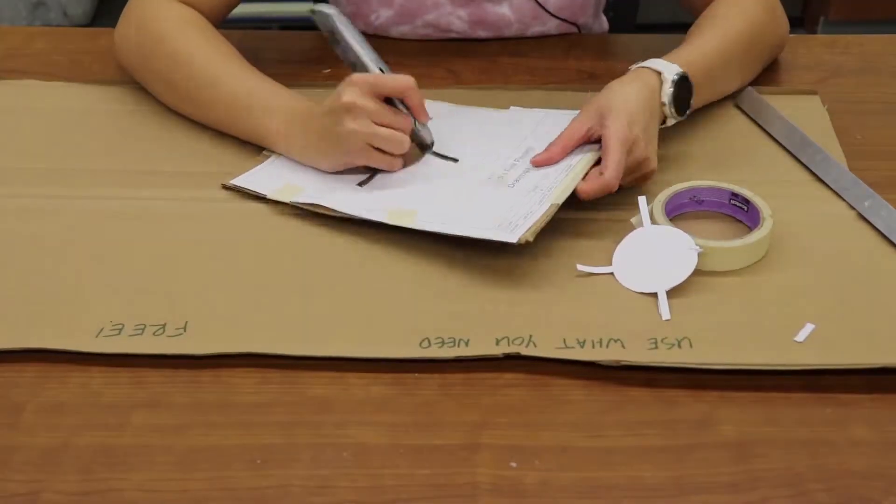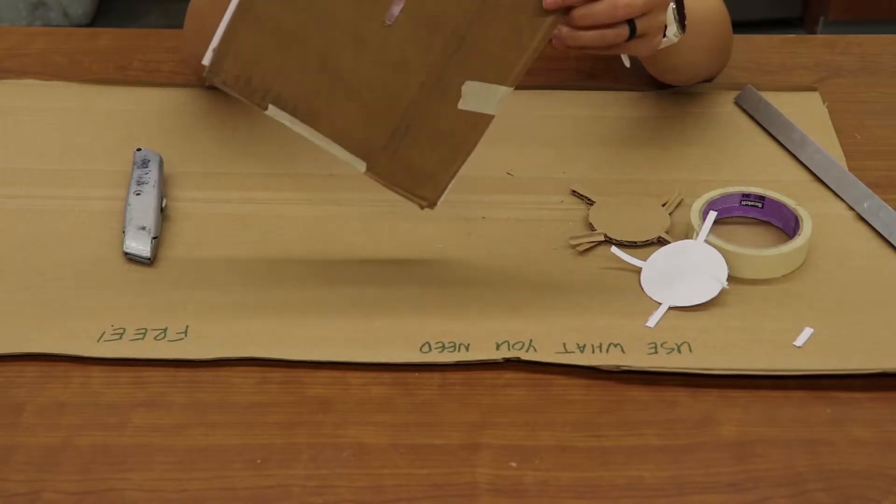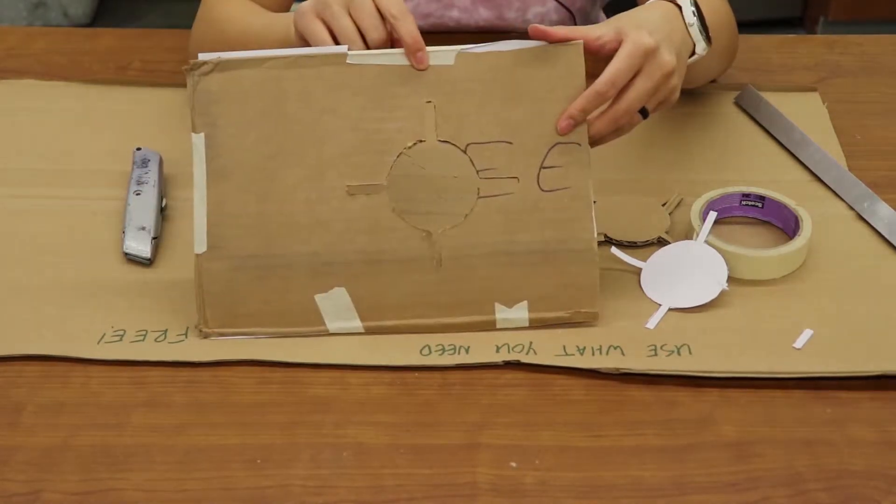Now that the fin alignment jig is cut out and prepared, we can glue our fins onto our body tube.